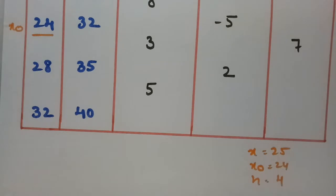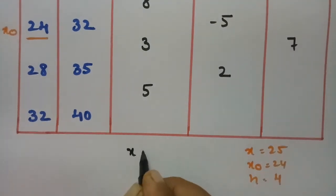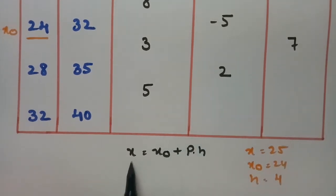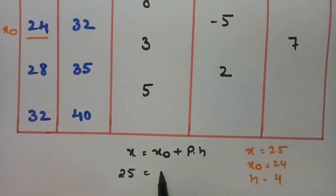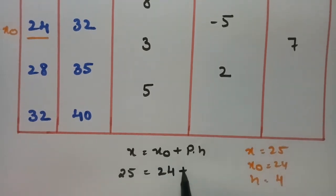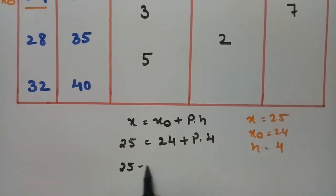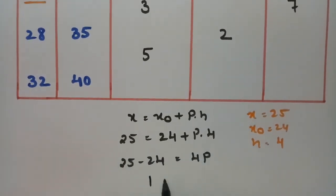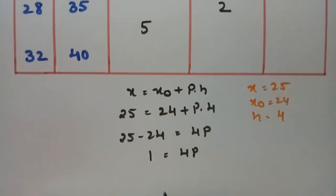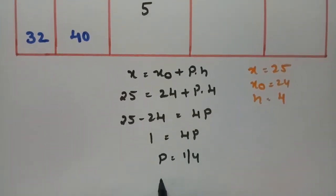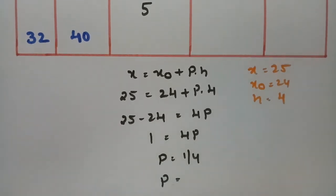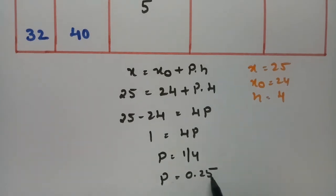Our x is 25 and x₀ is 24. Since x minus x₀ equals p times h, we have 25 minus 24 equals 4p, giving p equals 1/4, which is 0.25.